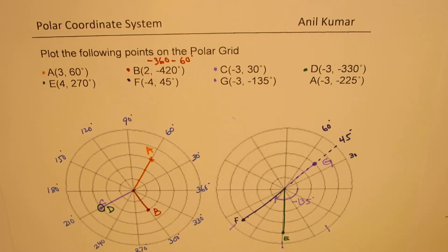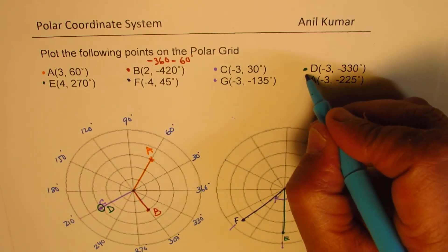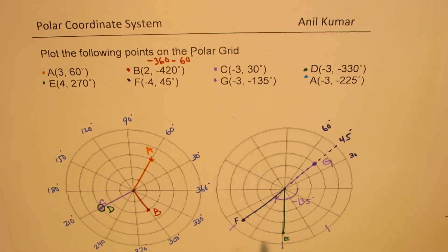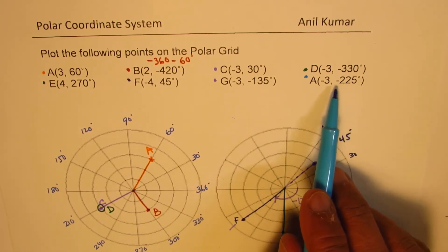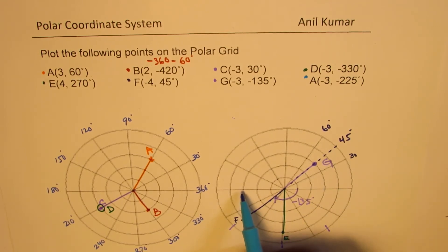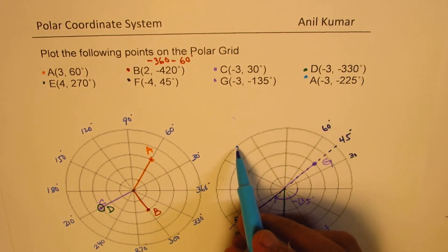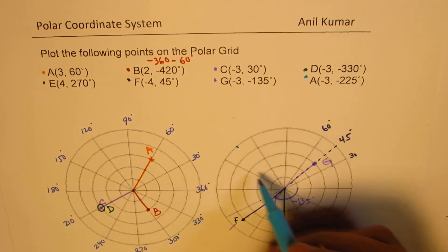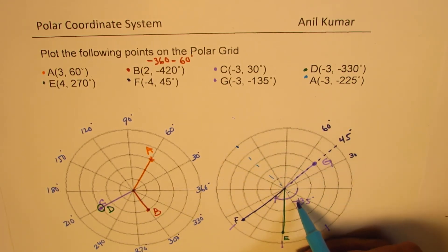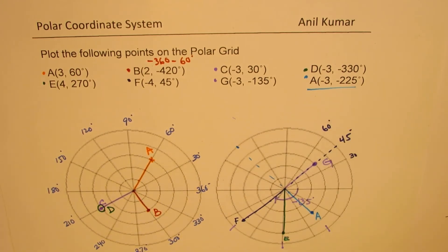The last point is A again, which is (-3, -225°). So 225 degrees is 180 plus 45, which lands here — and minus 225 will be right there. But since r is also negative 3, we don't point in that direction; we look at the opposite direction for 3 units: 1, 2, 3. That becomes the point. Do you understand the concept? This is point A for us.